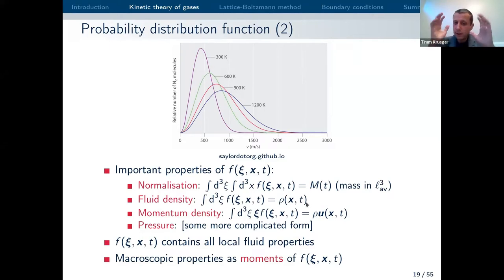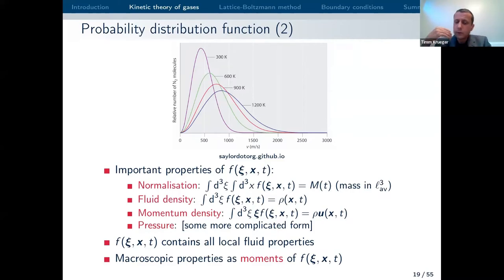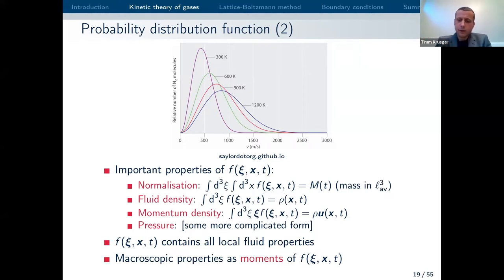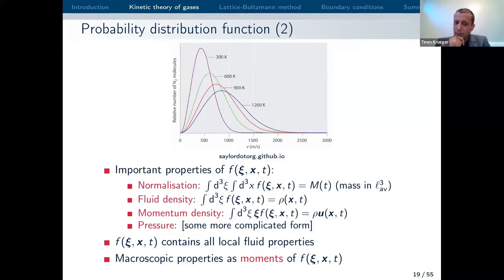If you take the first moment, you get the momentum density in that volume. Of course you throw away a lot of information the moment you take the moment, but importantly — and this is already key — these moments are the things that you would later use in Navier-Stokes. For example, the Navier-Stokes equation is concerned with density, pressure, and velocity, and these can be obtained in appropriate ways from the distribution function f via integration. You throw away a lot of information, but the microscopic information is included in your f distribution.